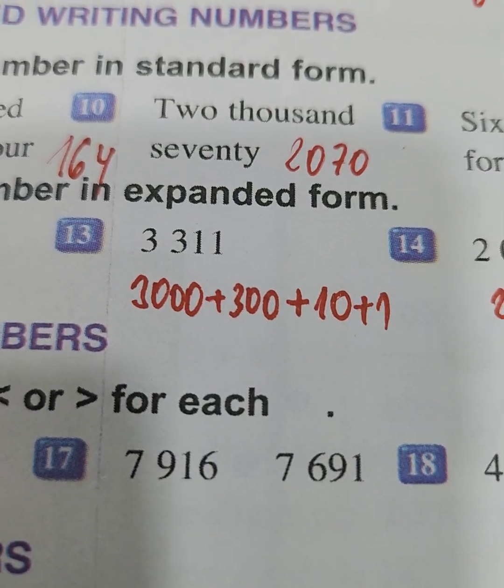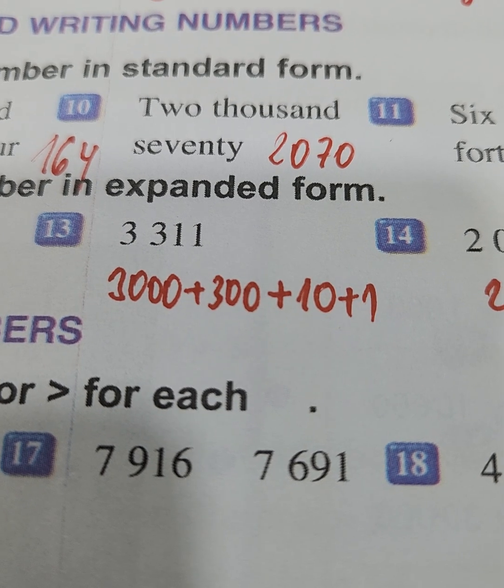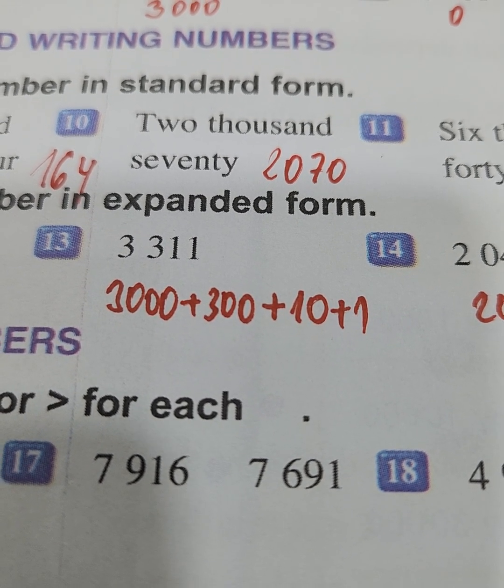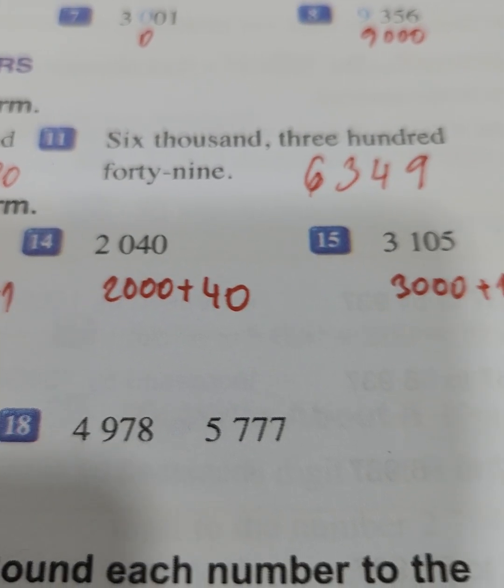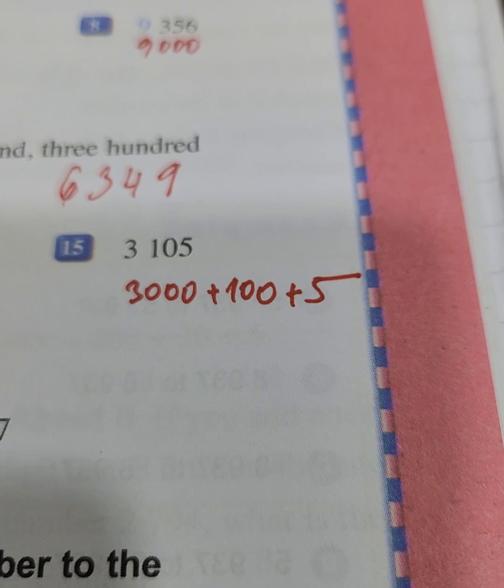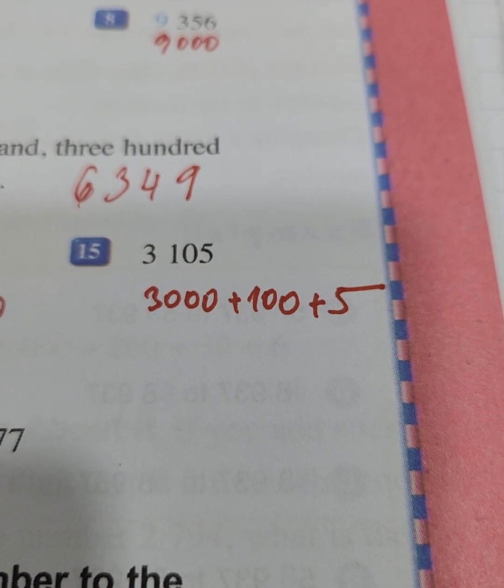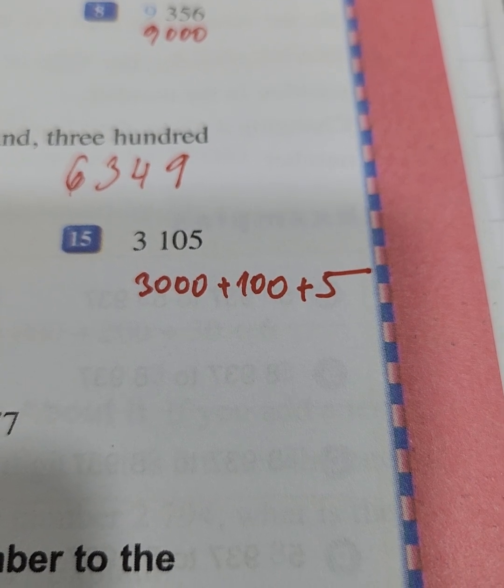Now exercise number 13. 3311, we can write this as 3000 plus 300 plus 10 plus 1. And number 2040 is 2000 plus 40. The last exercise, number 15, 3105, you will write as 3000 plus 100 plus 5.